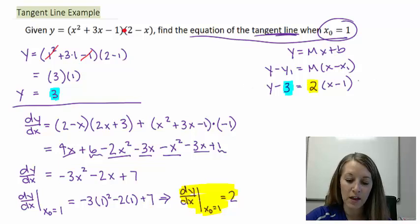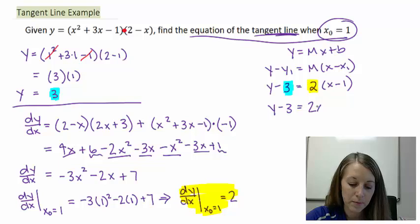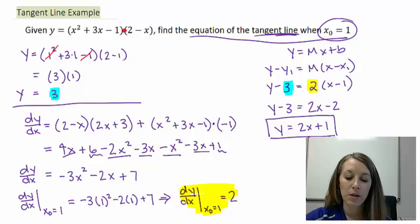All I have to do is simplify this here. And that will give me my equation of my tangent line. So let me distribute the 2 on the right and then move my 3 over. So we have come up with the equation of the tangent line to be y equals 2x plus 1.